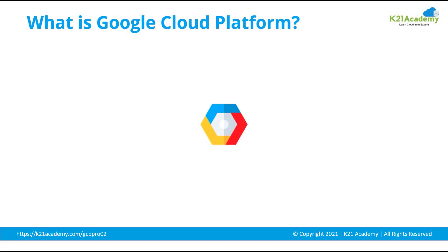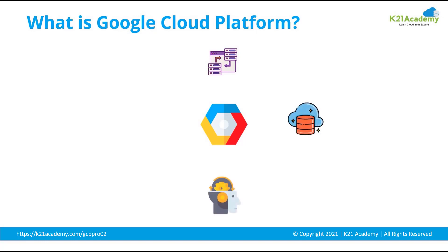Now let us understand what is Google Cloud Platform. GCP is a set of computing, networking, storage, machine learning, big data and management services provided by Google that runs on the same cloud infrastructure that Google uses internally for its end-user products, such as Google Search, Gmail, Google Photos and YouTube.